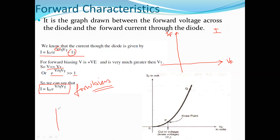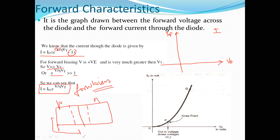We know that when we have a PN junction diode, initially there is a depletion layer. As we apply voltage, the diode does not conduct at small forward voltages. The condition for the diode to conduct is that this depletion layer must be collapsed.